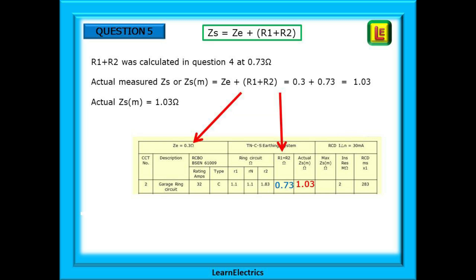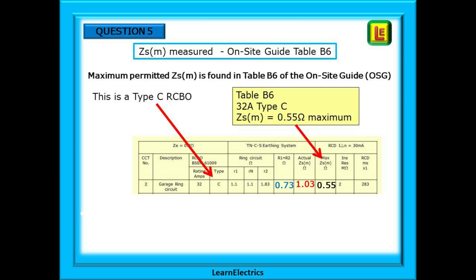We've just calculated R1 plus R2 for this circuit, 0.73 ohms. Using the formula shown at the top of the page, the actual measured Zs or Zsm is ZE plus R1 plus R2. These numbers are 0.3 and 0.73 which added together give 1.03 ohms. That is the actual Zs, what we should be measuring with our test meter.